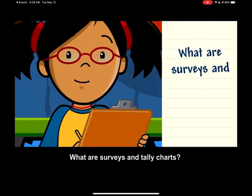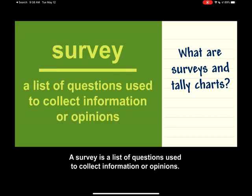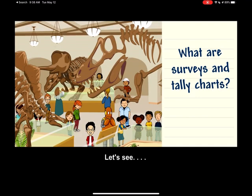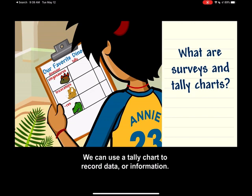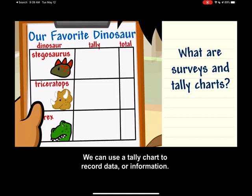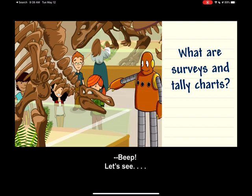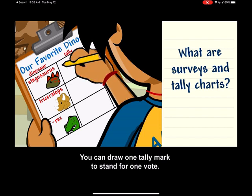What are surveys and tally charts? A survey is a list of questions used to collect information or opinions. There are three dinosaurs here. Let's take a survey to find out which one our classmates like best. We can use a tally chart to record data or information. Moby likes the Stegosaurus the best.